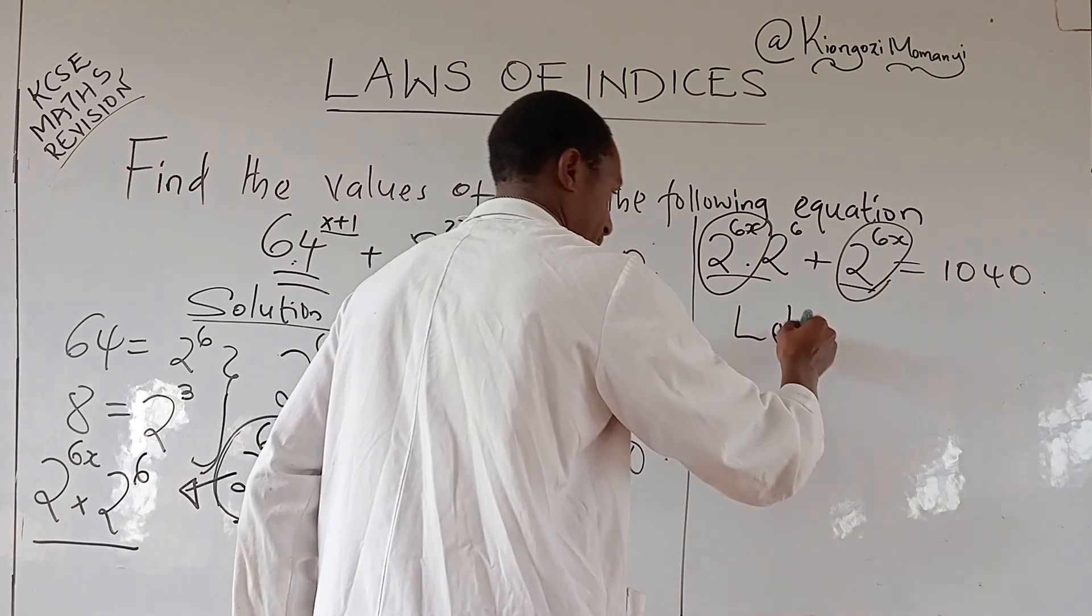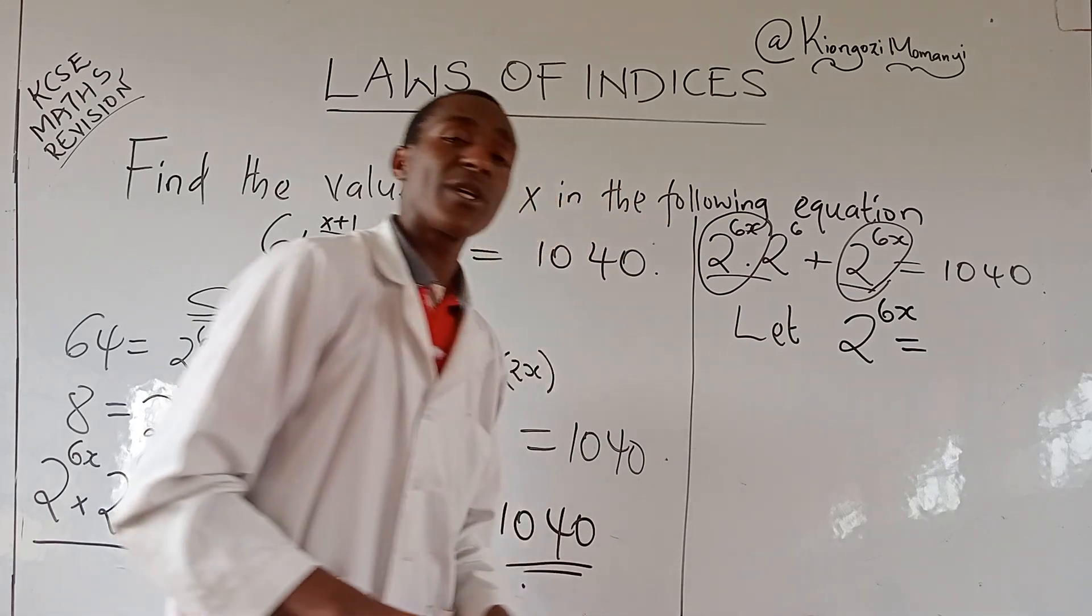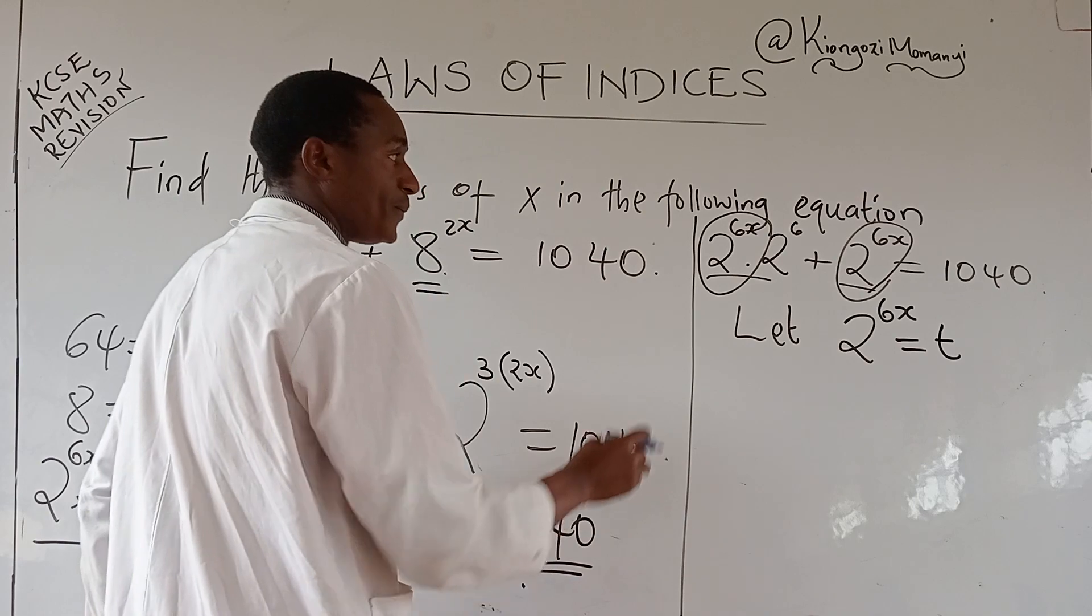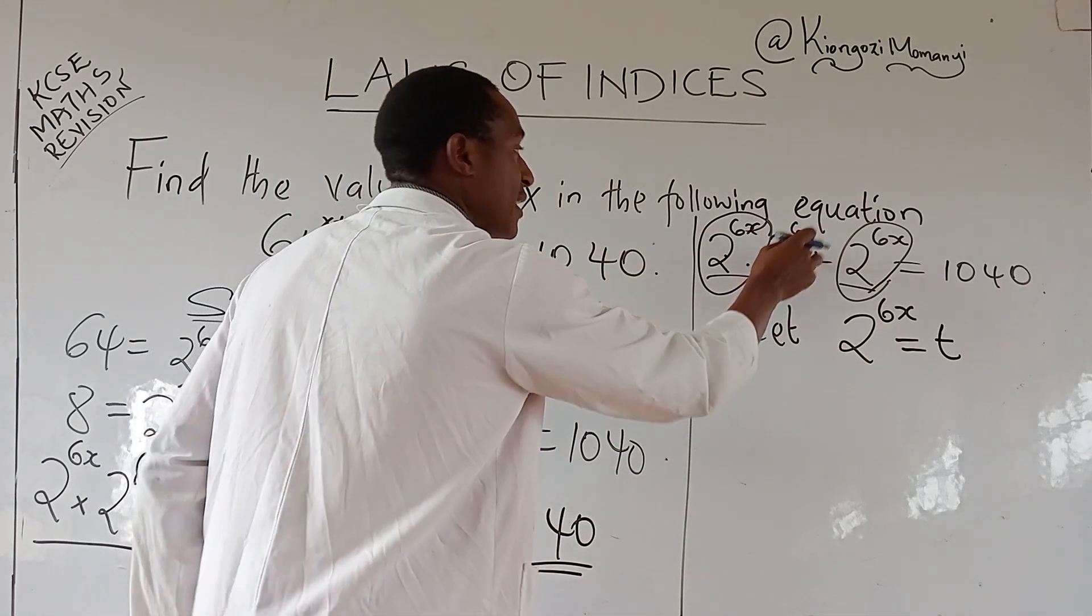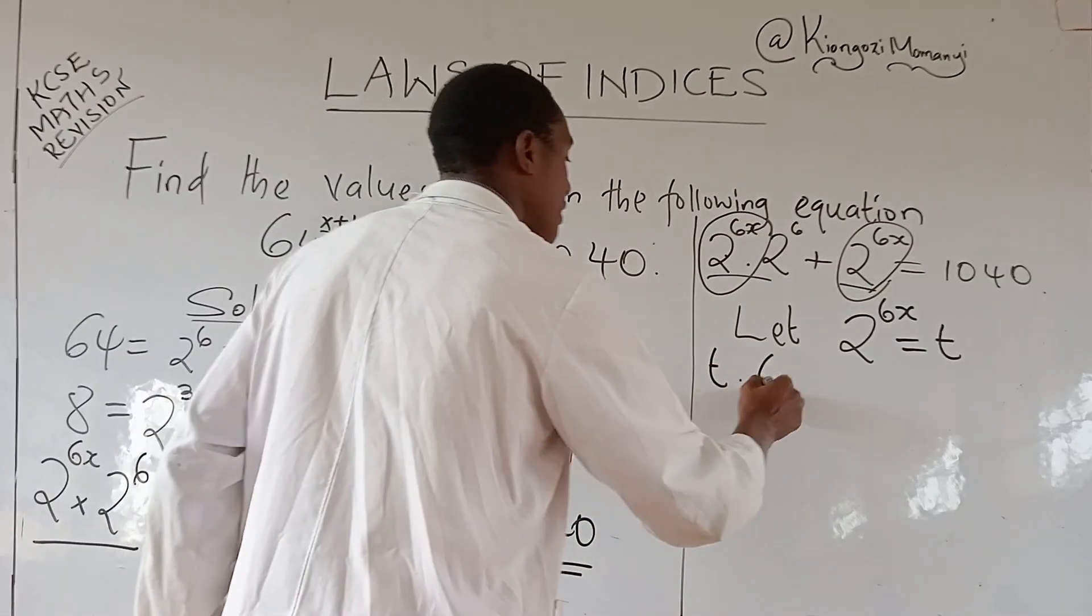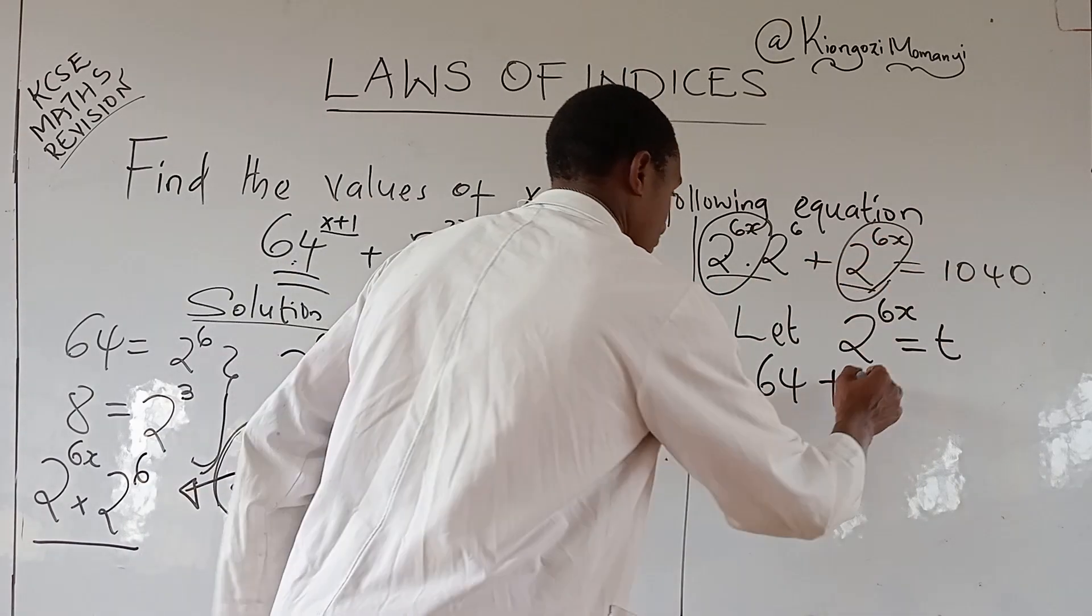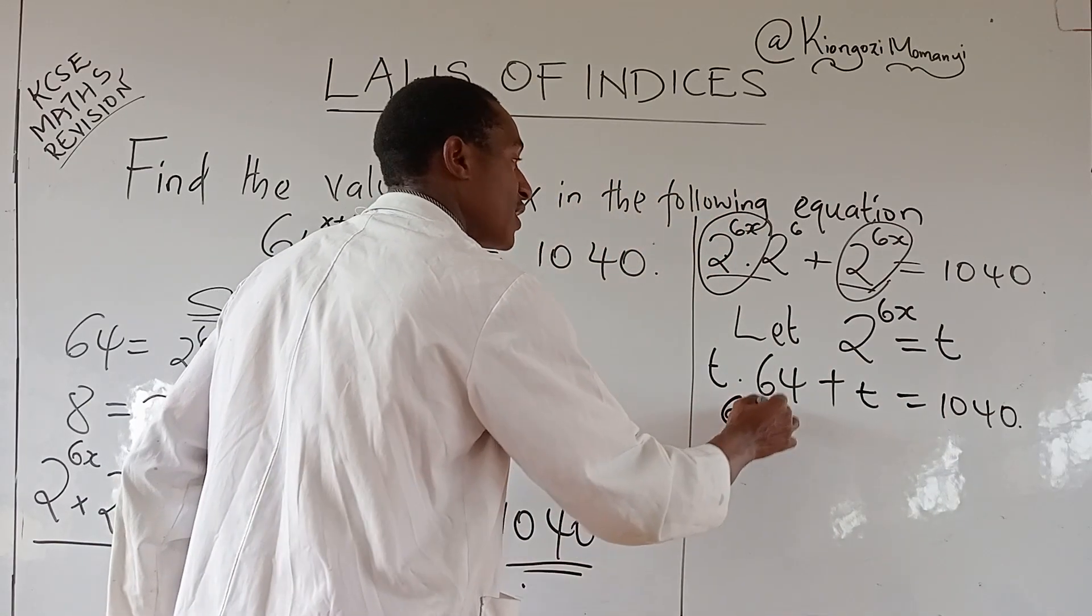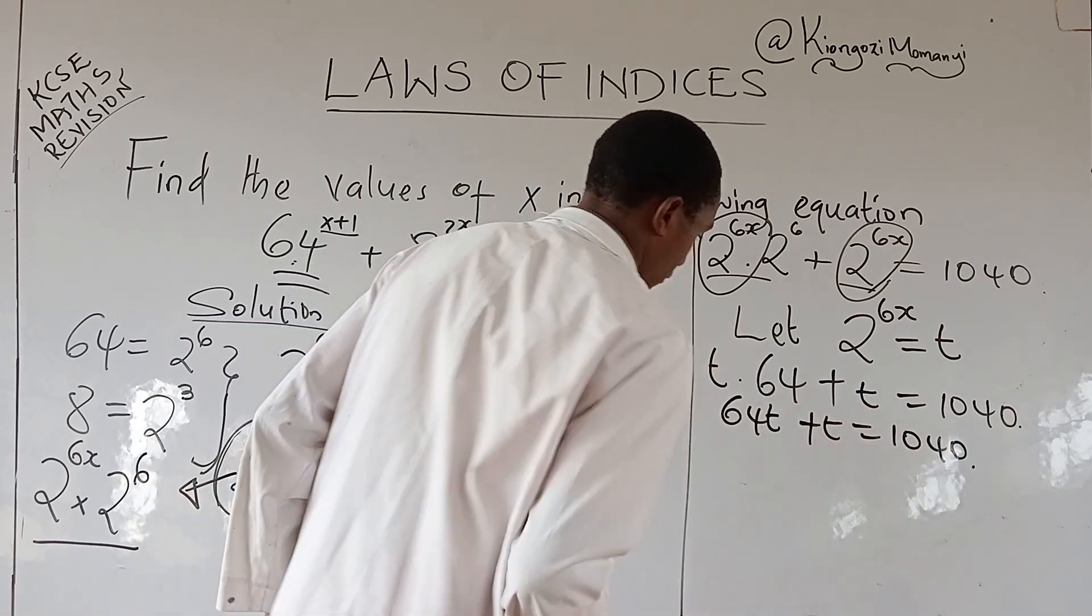So 2 power 6x is common to 1 power 6 of this side. So you let, let 2 power 6x be a value, for example, just a note, you can use t. So this one gives you, this is a t multiplied by 2 power 6. 2 power 6 is 64. Then plus this is a t, just one t, is equals to 1040. This is 64t plus a t is equals to 1040.